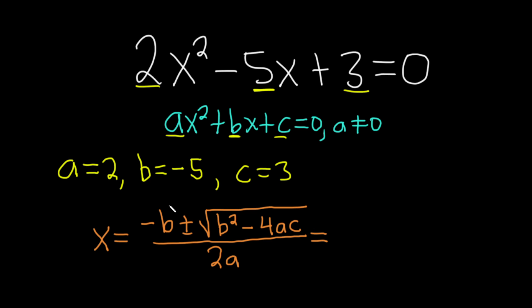So this is equal to, we have negative b which is negative of -5, so it's going to be 5, plus or minus the square root of b squared—so that's (-5)², which is 25—minus 4 times a, which is 2, times c, which is 3. And all of this is being divided by 2a, so 2 times 2.